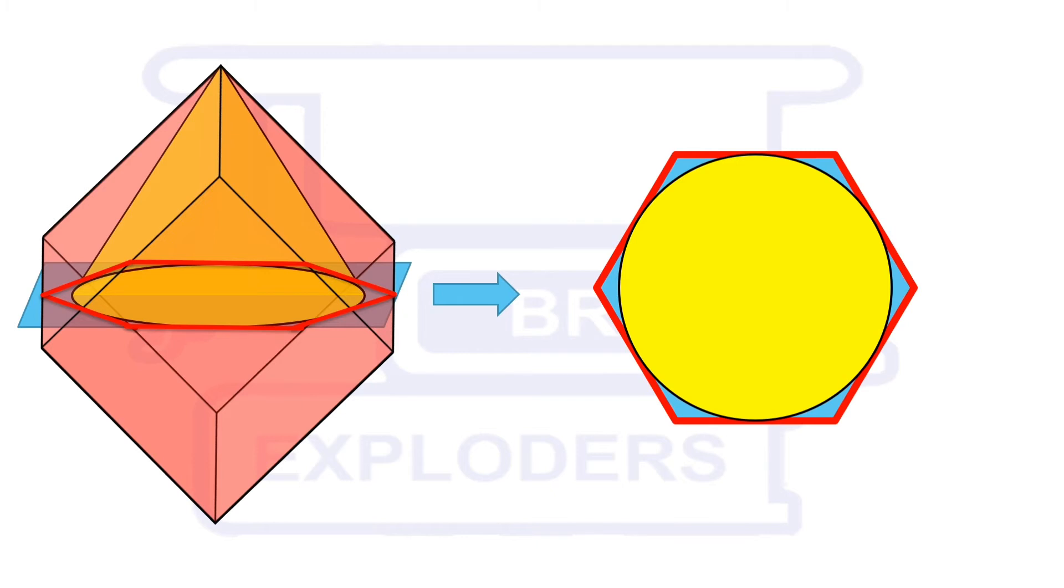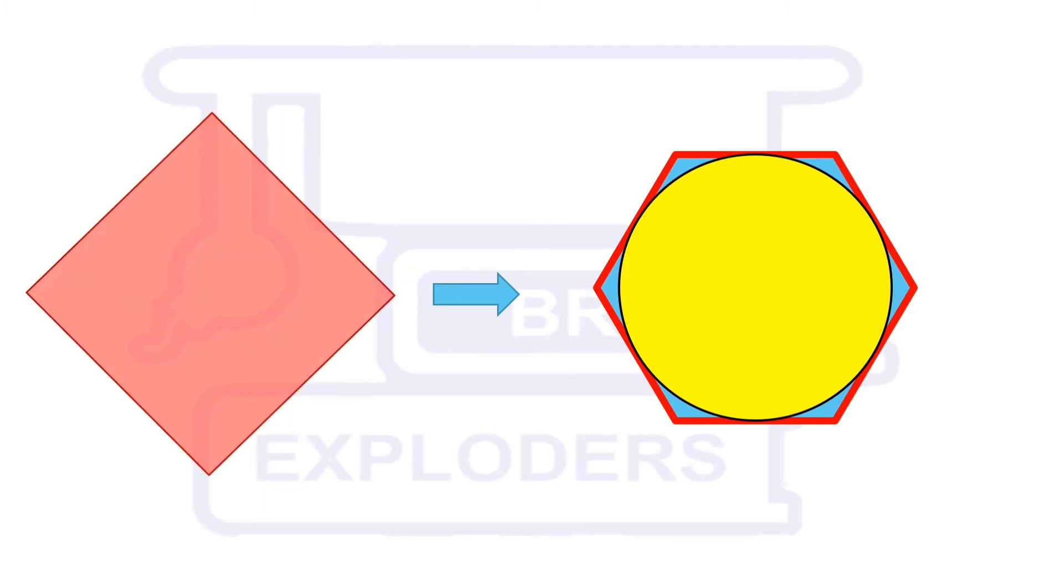To calculate the side length of this hexagon, take any one face of the cube. Join the midpoints of any two adjacent sides. Line segment joining these midpoints is one of the sides of this hexagon. So the side length of this hexagon is s root 2 over 2.